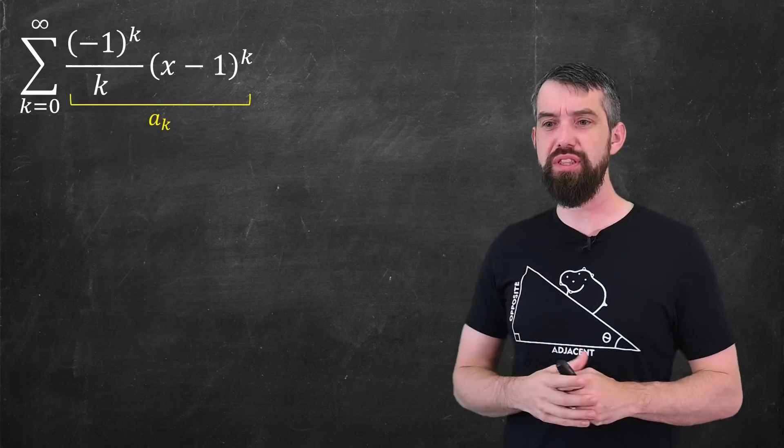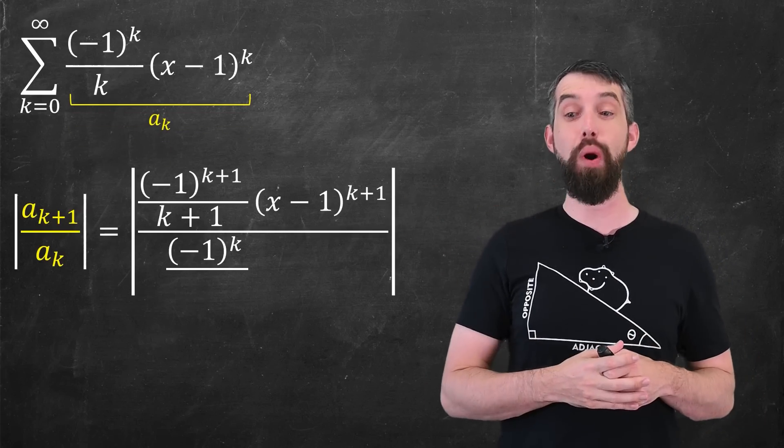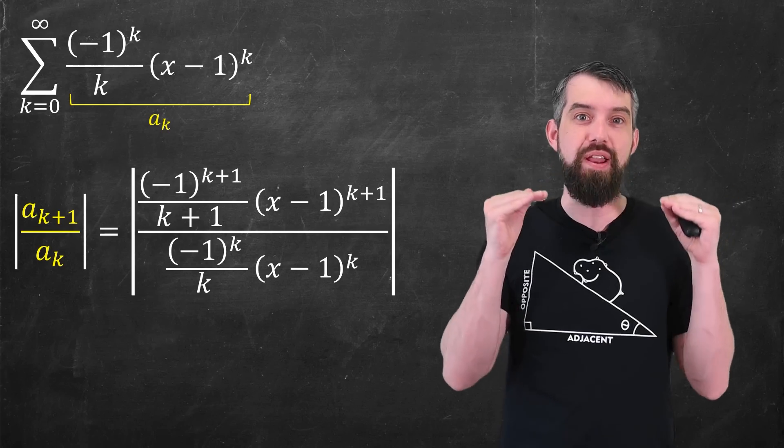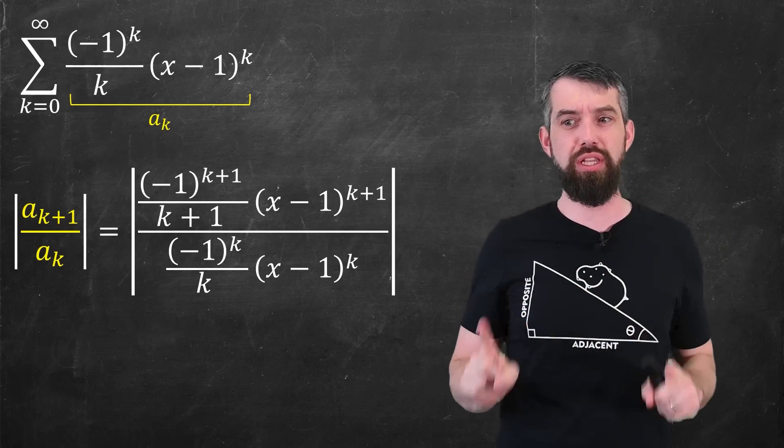If I refer to the terms in this series as being a sub k, then I can take the ratio of these terms, a k plus 1 divided by a k. It's a big mess, but don't worry, it mostly cleans up.